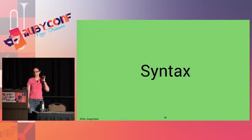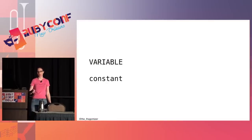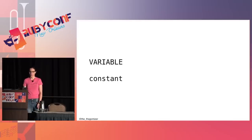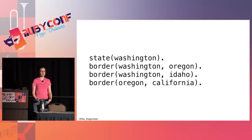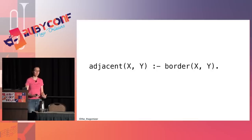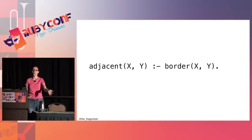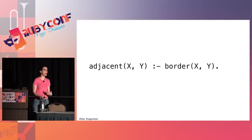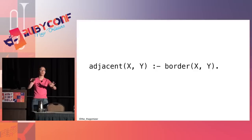Syntax in Prolog: variables start with a capital letter, constants start with a lowercase letter, and facts end with a period. I can say 'washington is a state,' or 'borders(washington, oregon),' 'borders(washington, idaho),' 'borders(oregon, california).' Then I can define a rule — the adjacent rule uses the :- symbol, which is a logical implication. Adjacent(X, Y) :- borders(X, Y). Prolog tries to pattern-match by finding constants to substitute for the capital-letter variables where a matching fact exists.